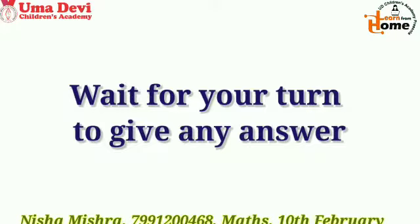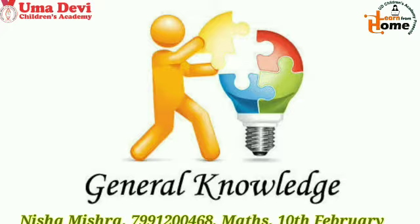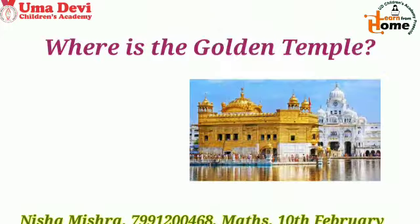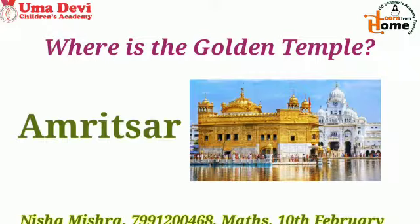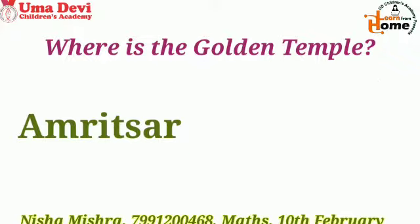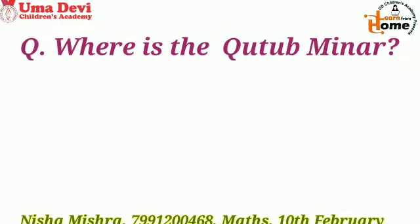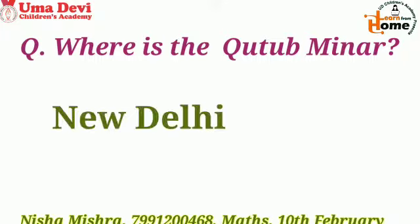These are the etiquettes of this week. I hope you all will follow these. Now let's do the revision of GK questions. Our first GK question is: where is the Golden Temple? The Golden Temple is in Amritsar. Our second GK question is: where is Qutub Minar? Qutub Minar is in New Delhi.